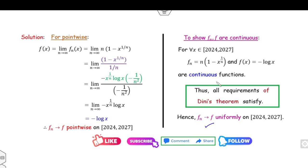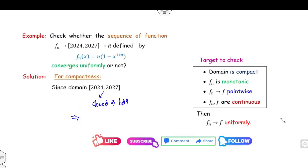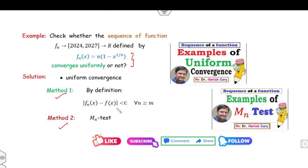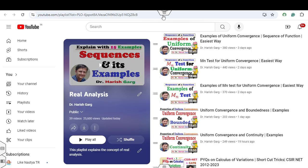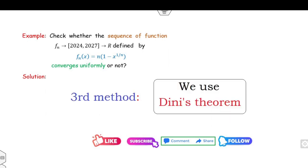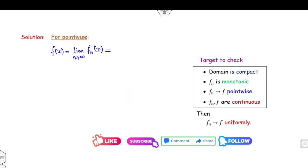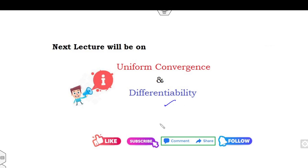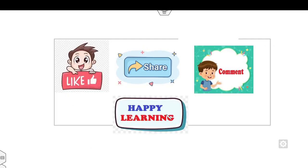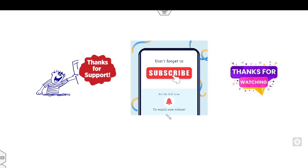Note: if in the given statement the interval were changed to, say, [1.5, 72], it would still be uniformly convergent, since x > 1 and the limit is not affected. For the first and second methods, you can try them yourself by watching the videos on my YouTube channel. I hope you like and comment on this video. The next lecture will be on uniform continuity and differentiability properties. Best of luck, and don't forget to subscribe. Happy learning!